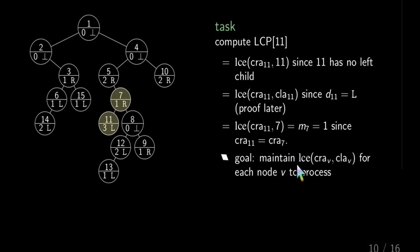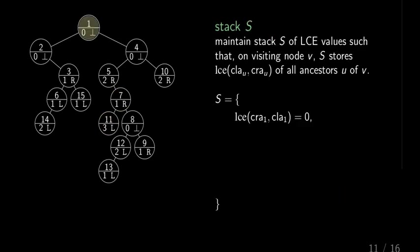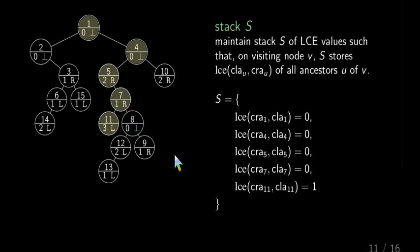The idea how to maintain these LCE values for each node we process is to maintain a stack and do a top-down traversal. So we traverse from 1 to 11 by having a stack S, and S stores the LCE clay U cray U for all ancestors U of V, where V is the visiting node. So we go down and go down and go down. Admittedly, it's not a particularly interesting example, but hopefully you get the idea.